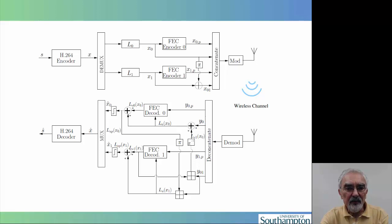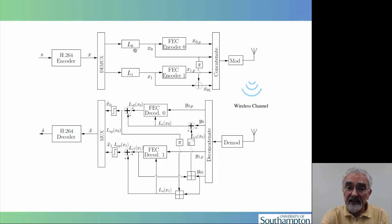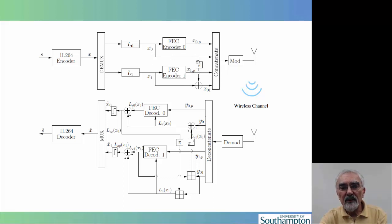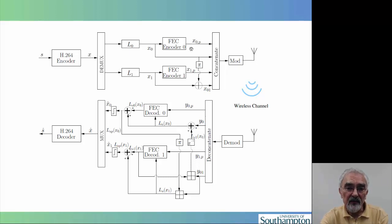Let's take a peek at the transmitter and receiver architecture. At the transmitter side, we use the H.264 encoder and used only two layers in this simple illustration for the sake of simplicity. The base layer L0 is error correction coded and transmitted along with the enhancement layer. The base layer is also embedded via a Modulo-2 addition into the enhancement layer. The objective of this is that in the undesirable situation where the enhancement layer has been received correctly but the base layer was corrupted or totally dropped by a router, all the power and channel capacity assigned to the enhancement layer has been wasted.